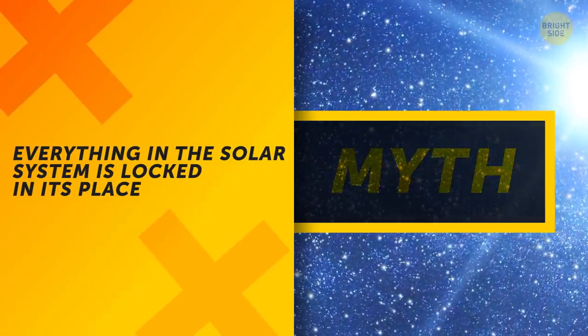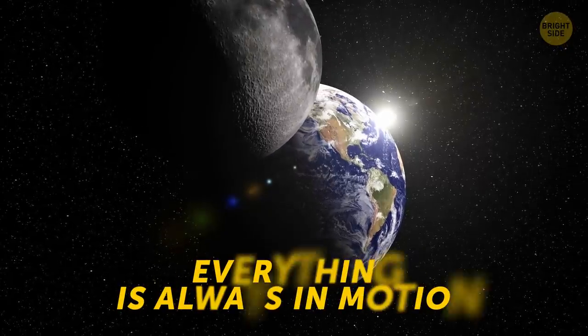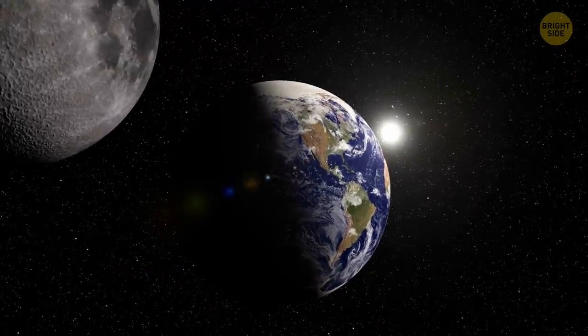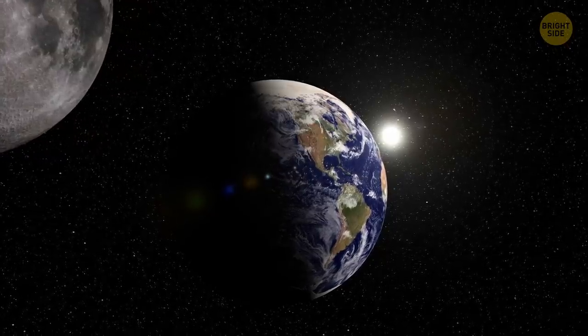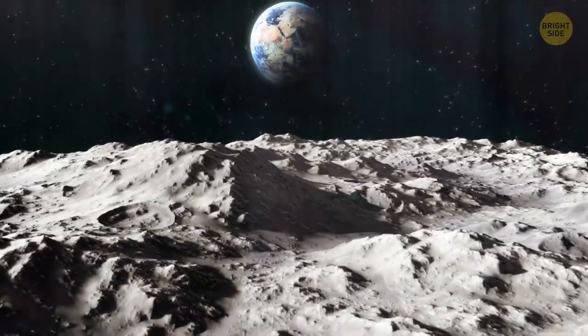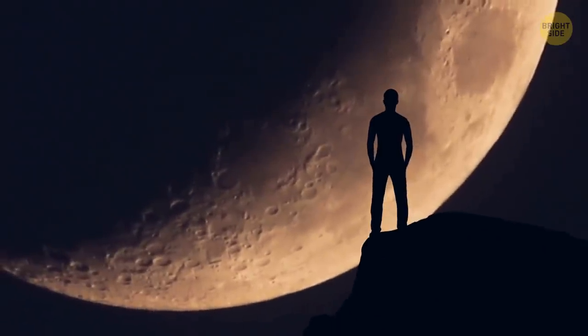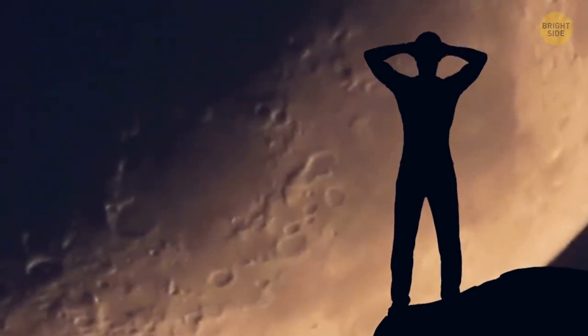Everything in the Solar System is locked in its place. Nope. Everything is always in motion. The Moon becomes more and more distant from the Earth with each year. And we're also going away from the Sun. The speed of such shifts and movements is too small to be a big deal for us, but it happens constantly.